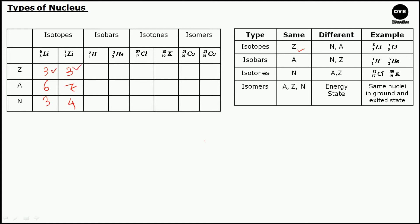The second classification is isobars. Isobars are nuclei that have the same mass number but differ in atomic number and neutron number. For example, ₁H³ has atomic number 1, mass number 3, and neutron number 2. But ₂He³ has atomic number 2, mass number 3, and neutron number 1. They have the same mass number but differ in atomic number and neutron number, so since they have different atomic numbers, they belong to different elements.